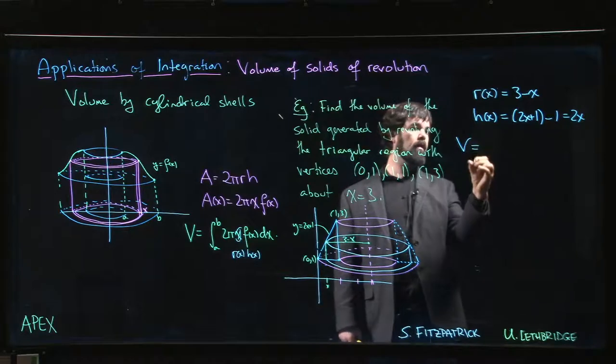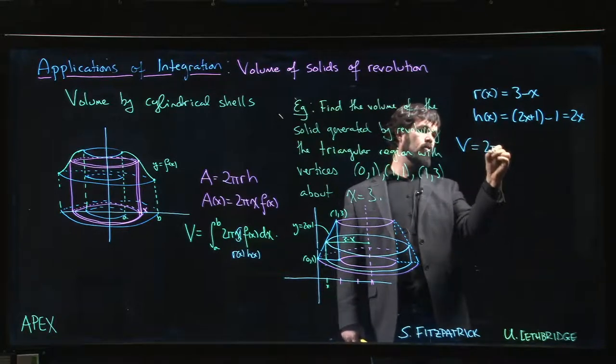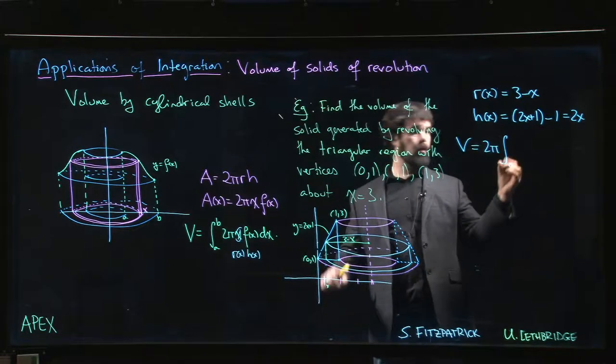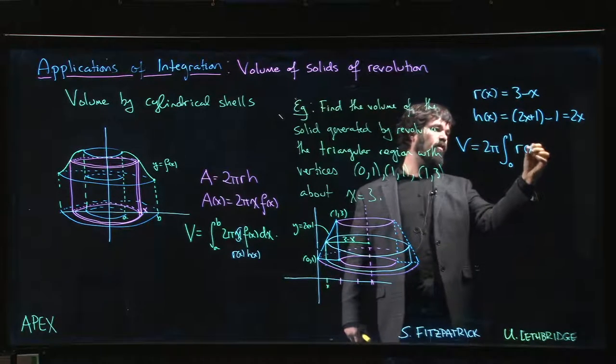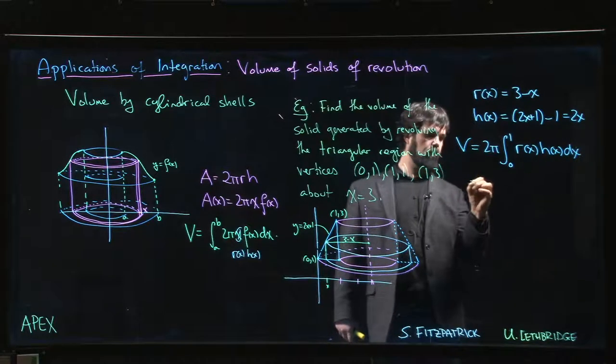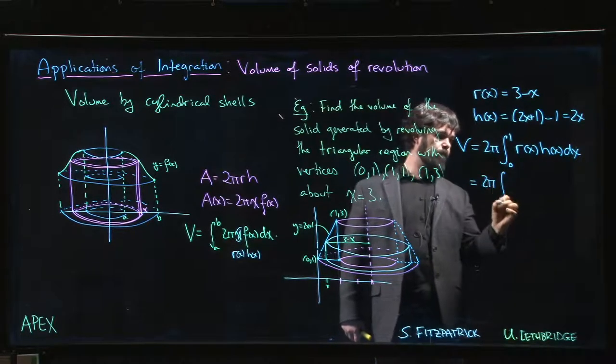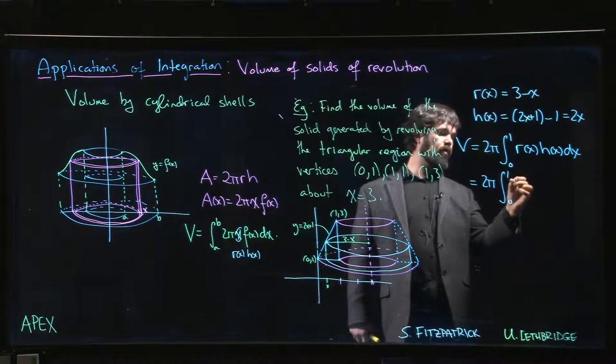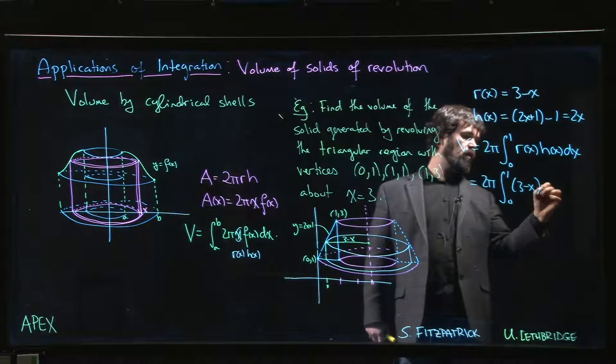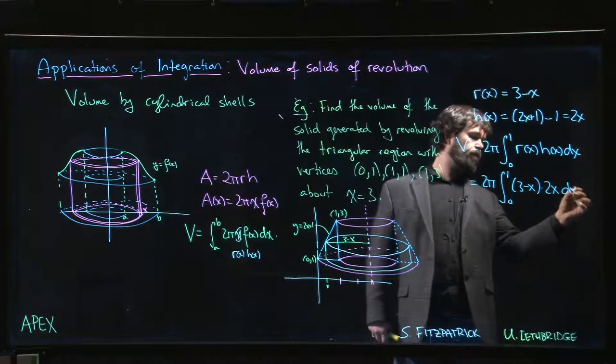So the volume then is 2 pi integral from, so x goes from 0 to 1, right? And we do r of x times h of x dx, so that looks like, well, r is 3 minus x, h of x is 2x.